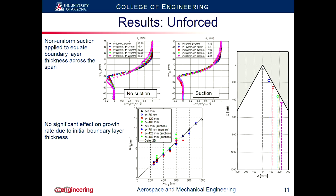Since there is inequality of momentum thickness across the span, we used non-uniform suction to equate the boundary layer across the trailing edge, to determine whether this boundary layer had an effect on the asymptotic rate of spread downstream. Without suction, particularly at the outboard location, we can see a thicker boundary layer. When suction was applied it was effective in equating the boundary layer across the trailing edge. However, equating the boundary layer showed no significant effect on the growth rate.